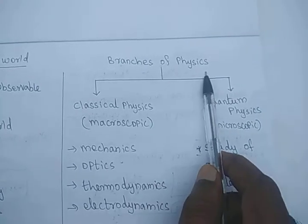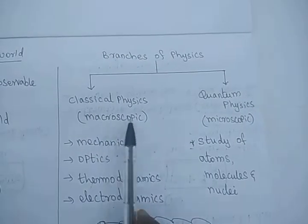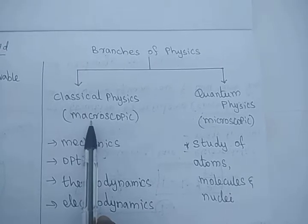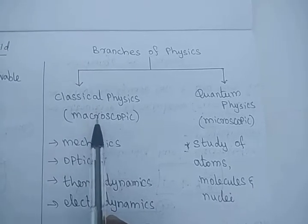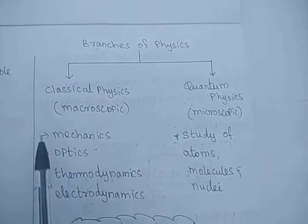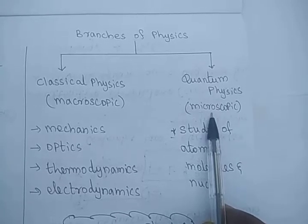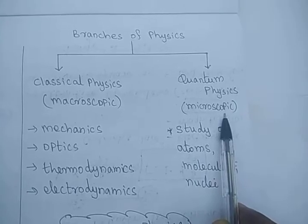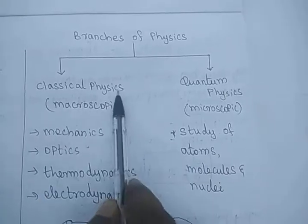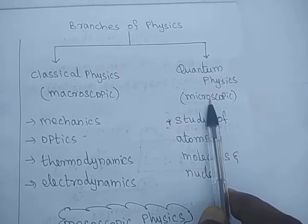Now we will see the main branches of physics. Physics is broadly classified into two branches: macroscopic and microscopic. The study about macroscopic things — which we are able to see with the naked eye — is called classical physics. Those things which are not able to be seen with the naked eye, for example electrons and protons, that is microscopic, and the study about those particles is called quantum physics. So broadly: classical physics is macroscopic study, and quantum physics is microscopic study.